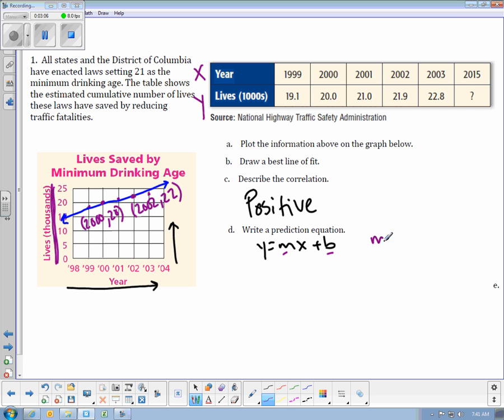So if I find the slope for that, I'm going to take the difference in y's over the difference in x. And I end up with 2 over 2, which is 1. So I have a slope of 1.